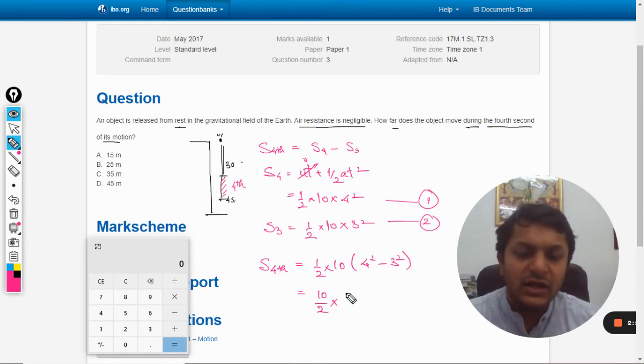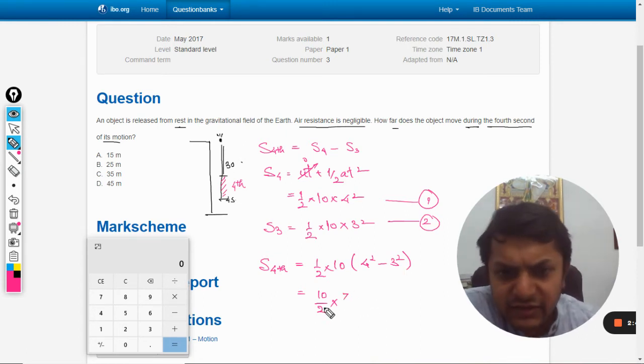So it will be 5 × 7, so 35. So our answer is C.